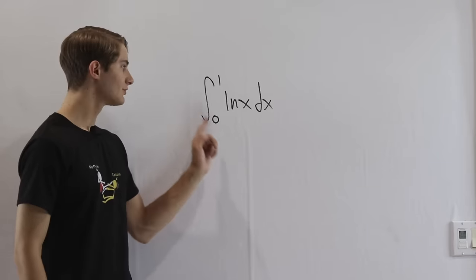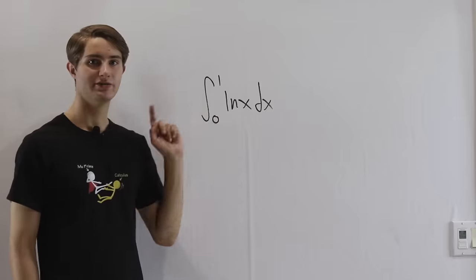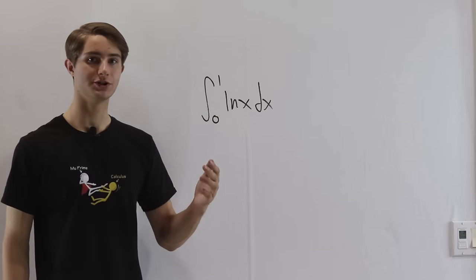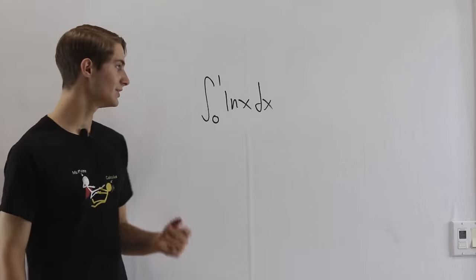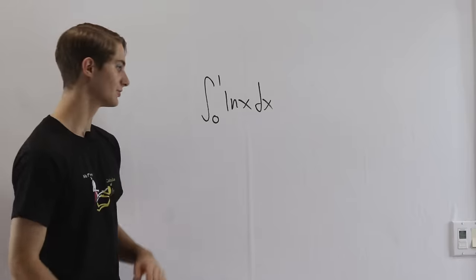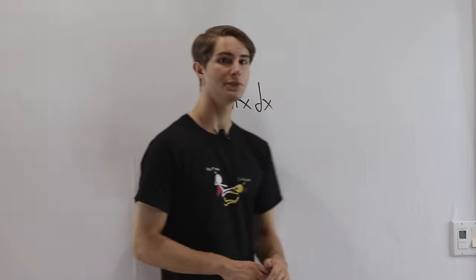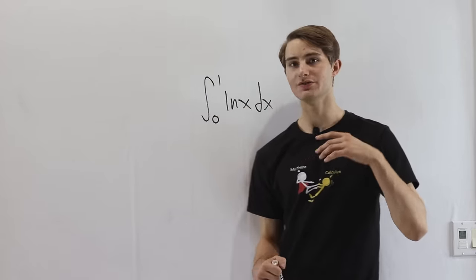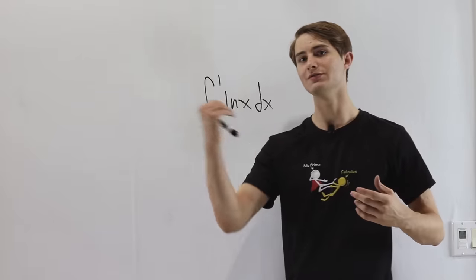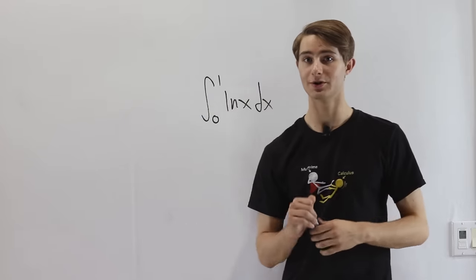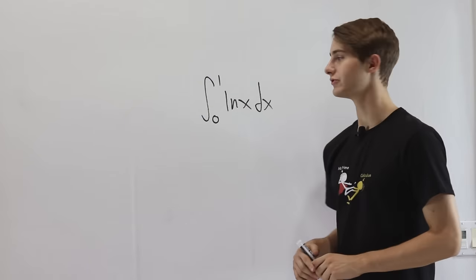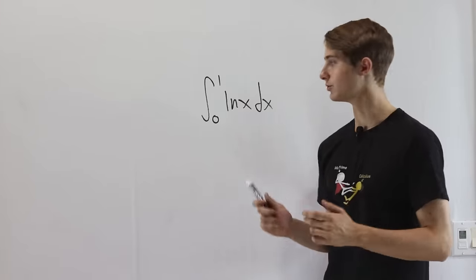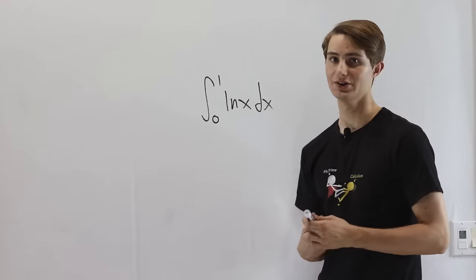We are going to do the integral from 0 to 1 of natural log x dx. Now once we've gone through our first few years of calculus, this is a pretty easy integral to evaluate. So we're going to have a little fun with it and say, instead of using u-substitution or integration by parts, we're going to restrict ourselves and use Feynman's technique in order to evaluate this integral.